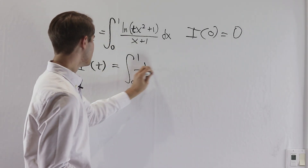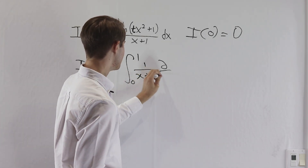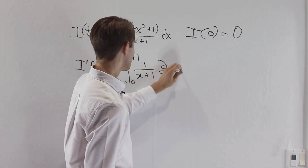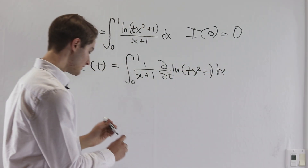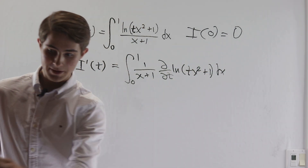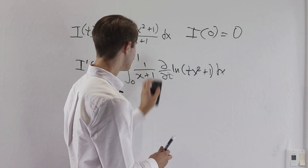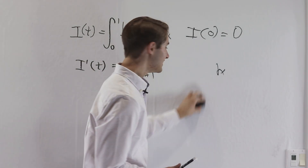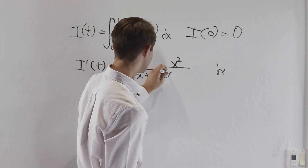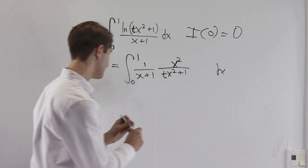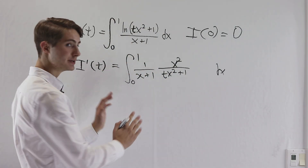Now 1 over x plus 1 is a constant with respect to t, so we can pull that out. Then we get the partial derivative with respect to t of the natural log of t x squared plus 1. Using the chain rule, we get x squared on the top from the t x squared term, and then the denominator becomes t x squared plus 1. So now we need a way to simplify this integral and turn it into something we know how to solve.